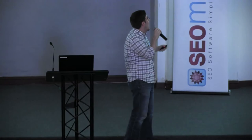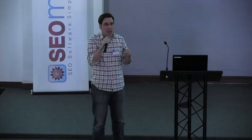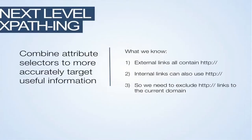It's a little underhanded, a little dirty, but you could make that happen. You can also integrate this into your link outreach process. If you want notification when a link goes live, you're doing outreach, you've got your list of prospects — you'll get a notification whenever it goes up, even if they don't get back to you. More next-level XPathing: we want to find every external link from CNN. To do this, we're going to have to combine attribute selectors in one XPath query so that we can target useful information.